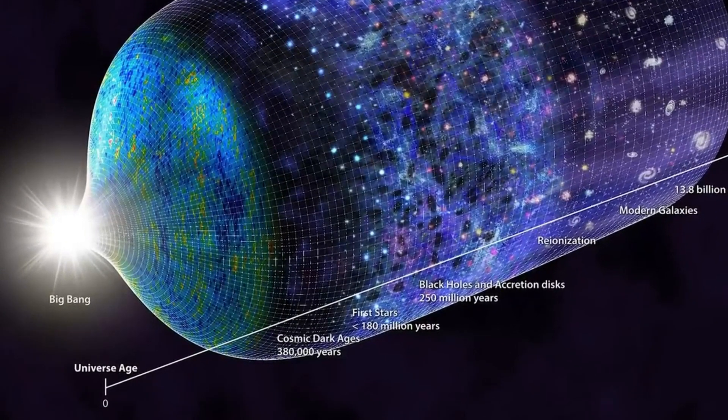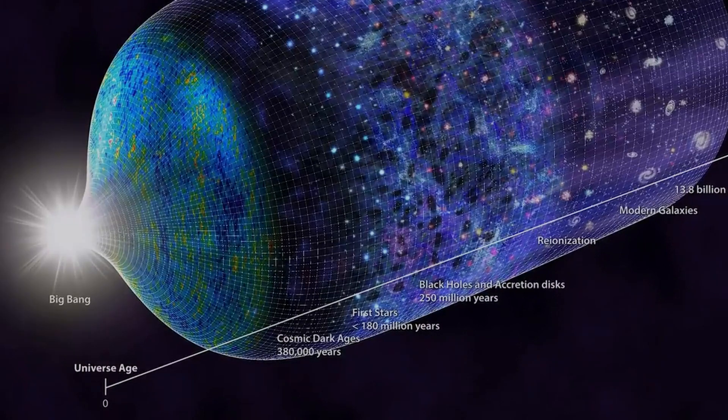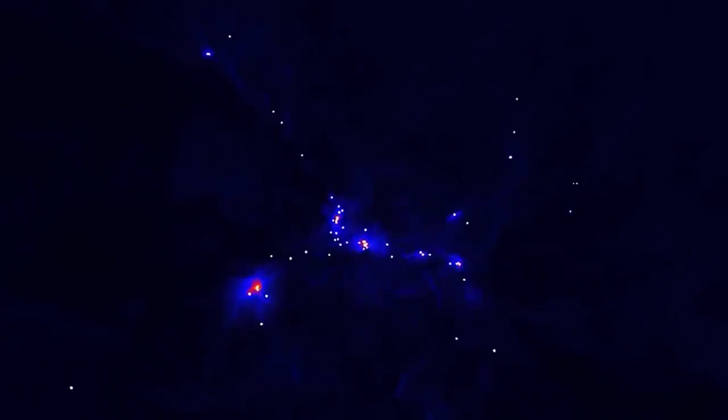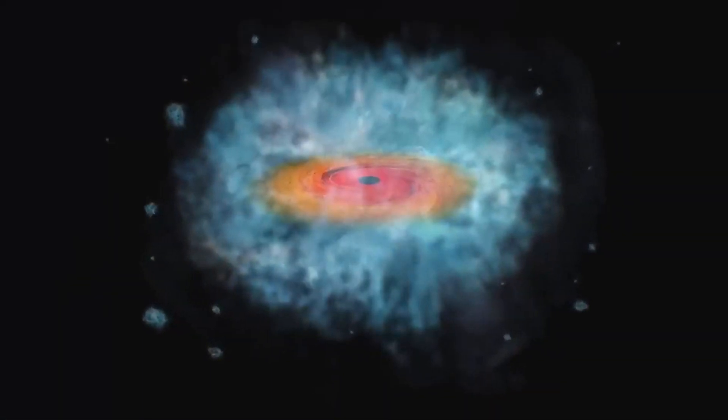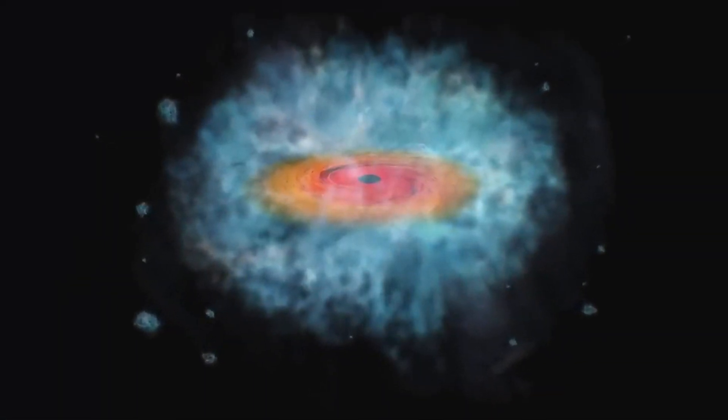could avoid fragmentation, meaning they wouldn't break apart into smaller pieces. Instead, they would gather all the matter together and collapse into a single entity, a black hole with a mass ranging from 10,000 to 1 million times that of the Sun.